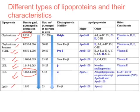Arranged in increasing order of density: chylomicrons, VLDL, IDL, LDL, and HDL. In decreasing order of density, that reverses to HDL, LDL, IDL, VLDL, and chylomicrons. Regarding size, chylomicrons are the biggest at 75 to 1200 nanometers, and HDL is the smallest at 5 to 12 nanometers. So arranged from largest to smallest: chylomicrons, VLDL, IDL, LDL, and HDL.